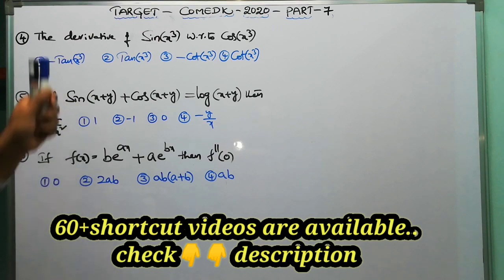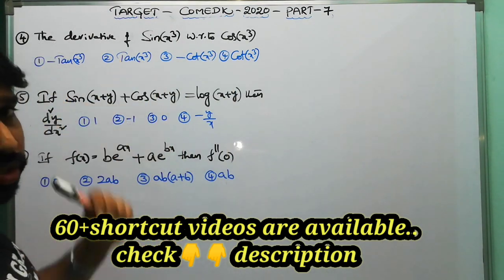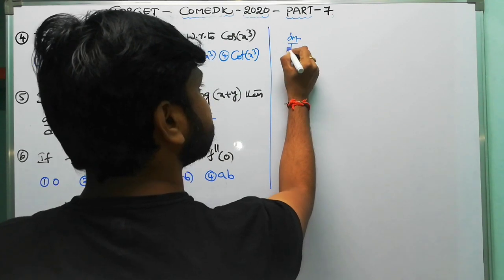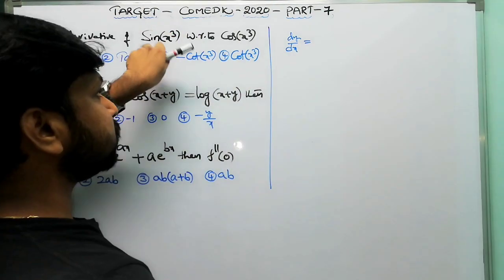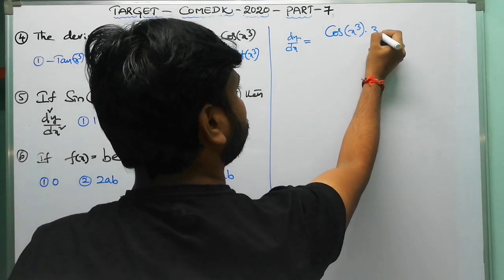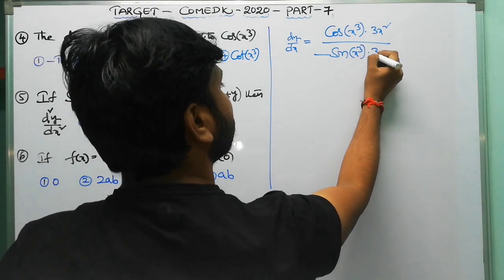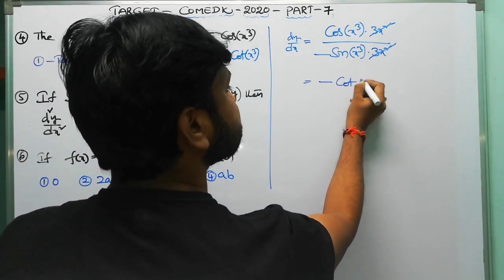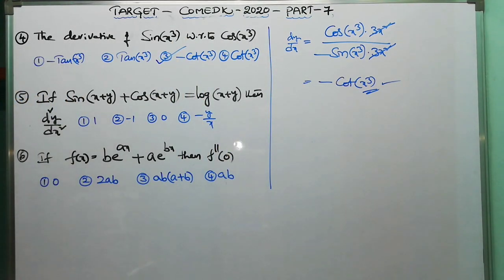Question 4: the derivative of sin(x³) with respect to cos(x³). Write sin(x³) in the numerator and cos(x³) in the denominator. Numerator derivative: cos(x³)·3x². Denominator derivative: −sin(x³)·3x². The 3x² terms cancel, leaving −cos(x³)/sin(x³) = −cot(x³). The third option is the correct answer.